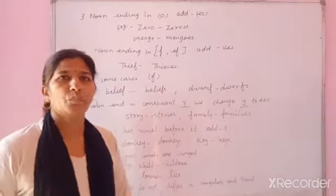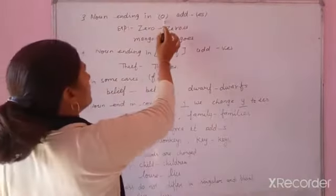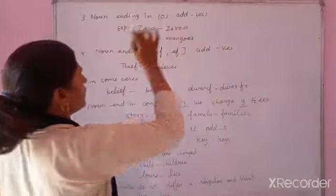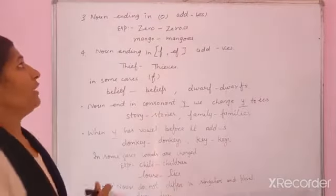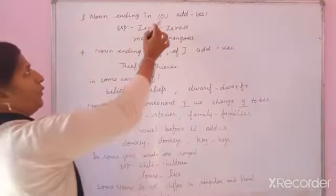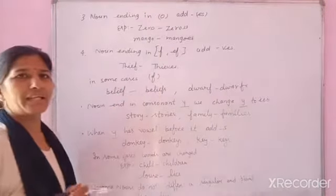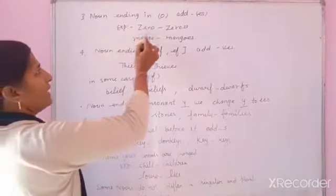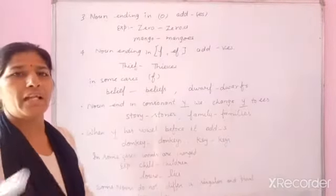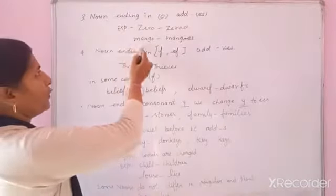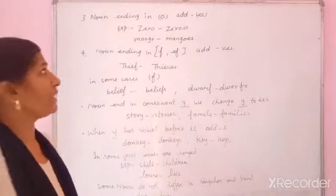Next, point three: noun ending in O. Aise words jinke last mein O ho, unme kya add karenge — ES. Like 'zero' becomes 'zeroes' — last mein ES. 'Mango' becomes 'mangoes' — ES use karke.